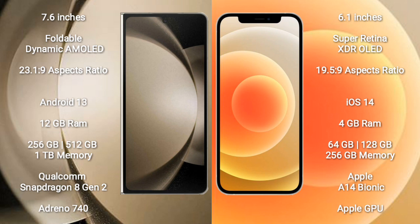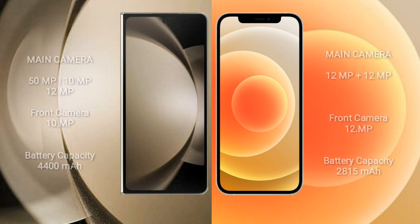iPhone 12 comes with 4GB RAM and 64GB, 128GB, or 256GB internal storage. It features an Apple A14 Bionic processor and Apple GPU. Samsung Galaxy Z Fold 5 has a rear triple camera setup.